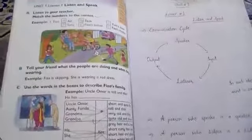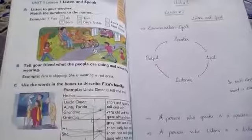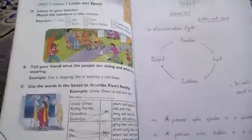Fiza is skipping. She is wearing a red dress and no socks. She is quite small. She has black hair in bunches.